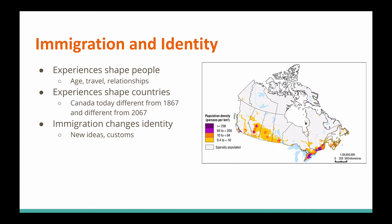Let's get started with Immigration and Identity. We know quite a bit about identity — we've been dealing with identity the entire year, and we know that the experiences people have shape their identity. That includes their age, any travel they have done, their friendships, and jobs they've had. All of that is going to affect their identity. Well, the same thing is said to be true for countries.